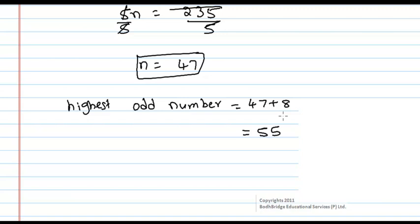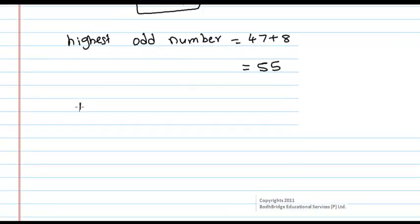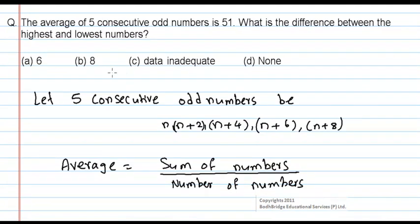Now you want the difference between the highest number and the lowest number. So difference equals 55 minus 47, that is equal to 8. This is the required answer. From the options, we have option B as 8, so option B is correct.